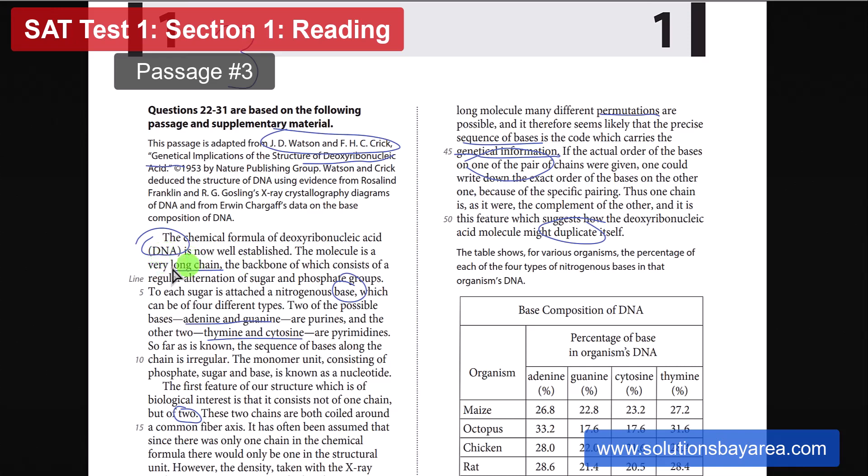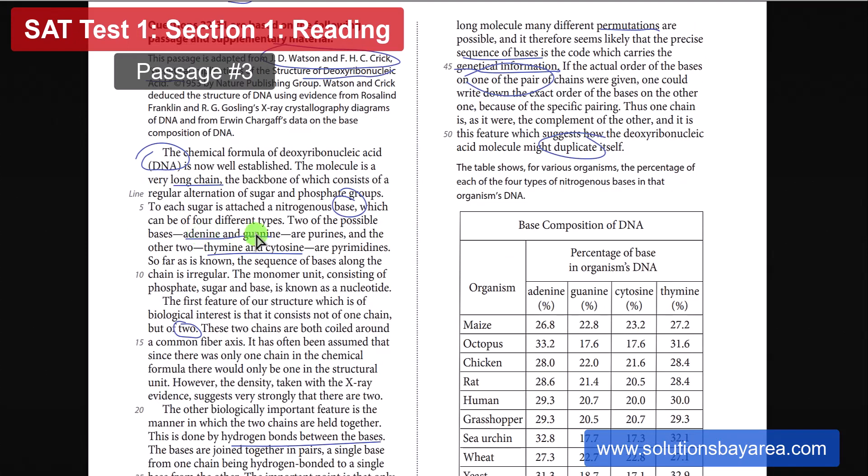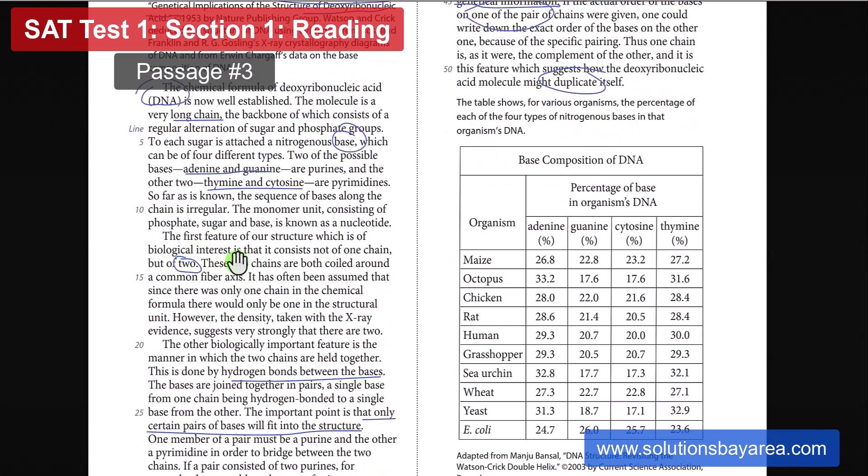It talks about how DNA is a very long chain. It talks about how the backbone is going to consist of an alternation of sugar and phosphate groups. It talks about how there are four bases: adenine, guanine, thymine, and cytosine. Again, this is something you learn in bio. So you've got the purines, and you've got the pyrimidines. And moving on, the next paragraph talks about how you don't just have one backbone or one chain. It's actually two long chains. So the two long chains, that's what gives you the twisted helix shape of the DNA.